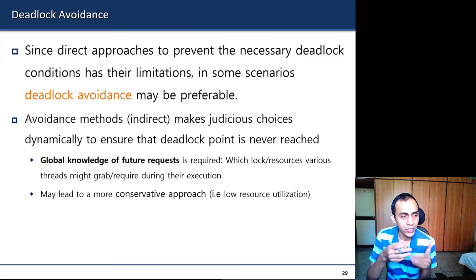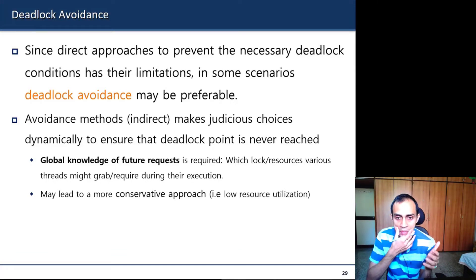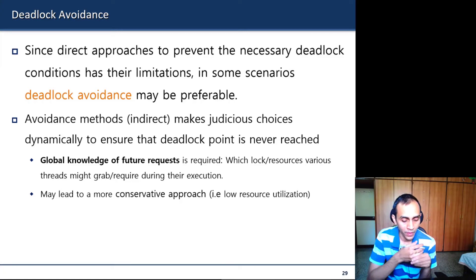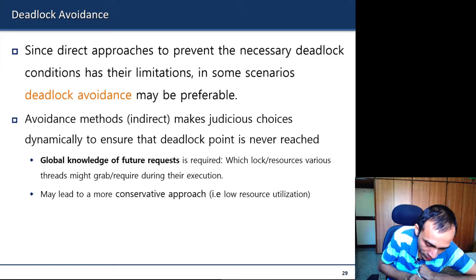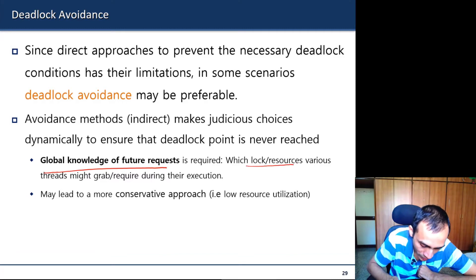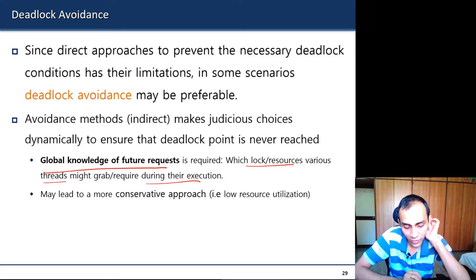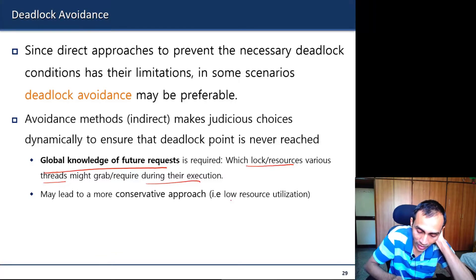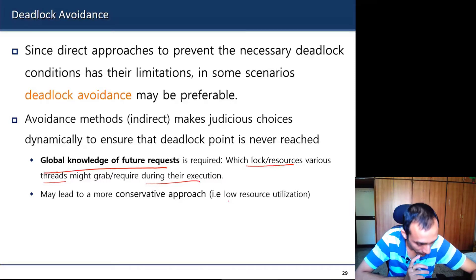With this a priori knowledge you allocate resources judiciously: when a request comes in, you determine whether granting it is safe — whether the system could enter a deadlock. If it is unsafe, you wait until more resources become available. This avoidance method needs global knowledge of all future resource requests by each thread, is somewhat conservative, and can lead to low resource utilization.